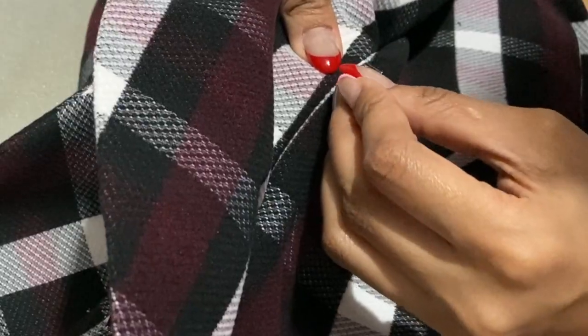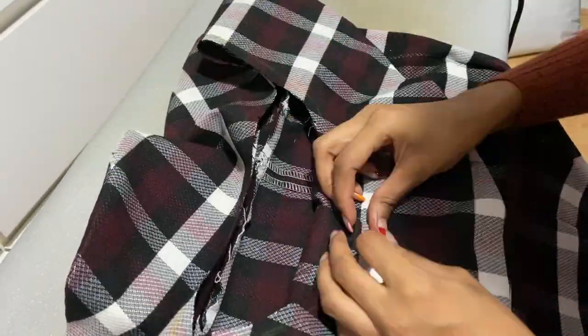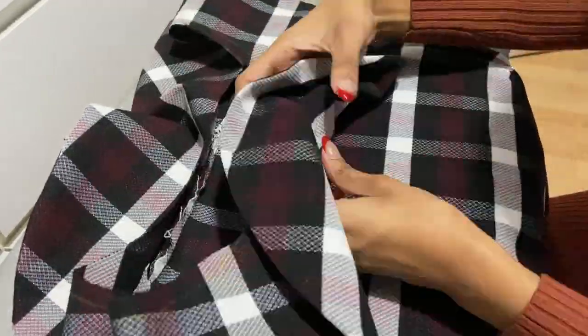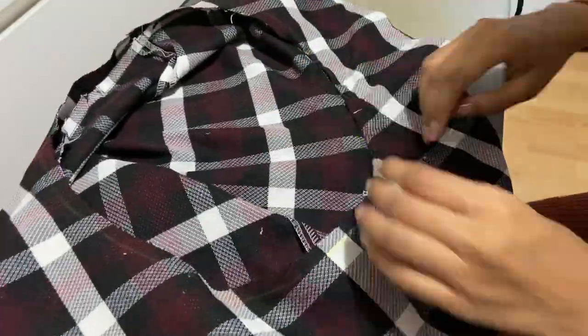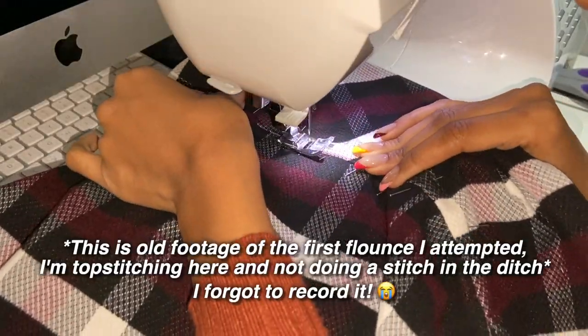I'm going to fold the seam allowance inwards following the seam allowance guide we marked earlier and pin the fabric down so that it's about two millimeters above the seam line. Pin it in place from the right side of the fabric and check that you've caught it on the back. I like to push the pin in as close to where I plan to stitch to give me more reassurance that I will catch the fabric.